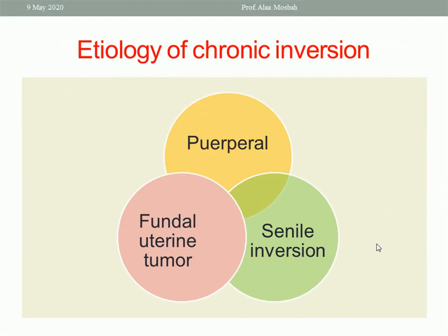In chronic inversion, it is related to three factors: late puerperal — after four weeks — fundal uterine tumor whether benign like leiomyoma or malignant like uterine sarcoma, or senile inversion.